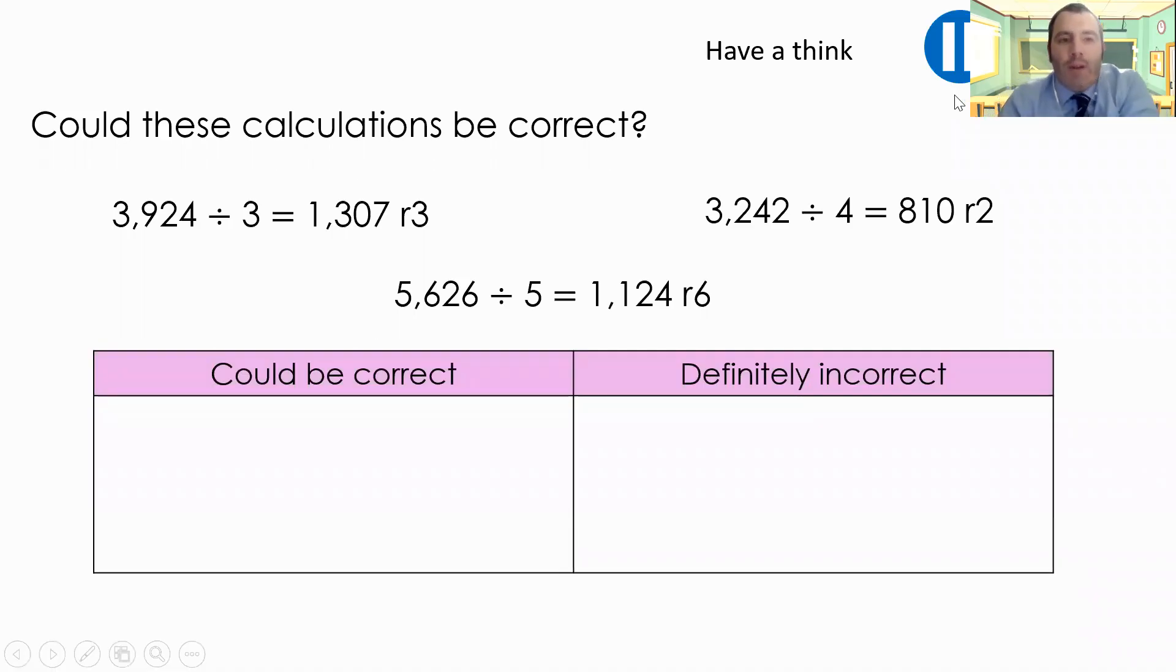OK, how did we get on? Did you spot the mistakes that have been made? So if we look at our first one, 3924 divided by three. I only really need to look at the remainder here. My remainder is the same as what I'm dividing by. And we can't have that. We've just worked that through with the straws and the triangles. So I can say that that is definitely incorrect.